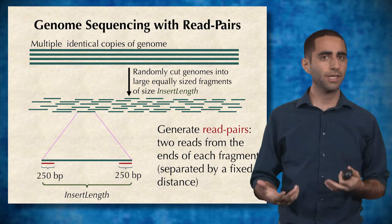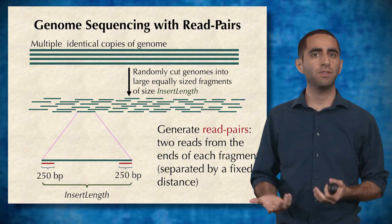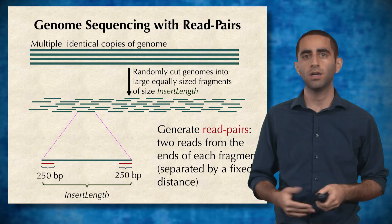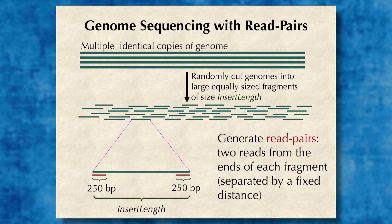As a result, to get around this, scientists create multiple copies of the genome using a process called PCR. Using these multiple copies, they basically randomly chop them up into little tiny pieces and then sequence those tiny fragments. The result is that we generate read pairs where, given a fragment of known length, we have two reads at either end that we know the sequence of.